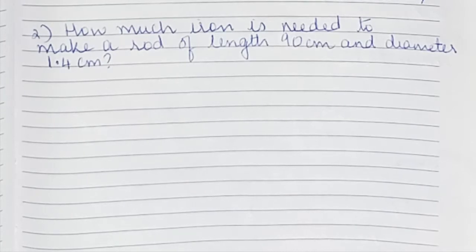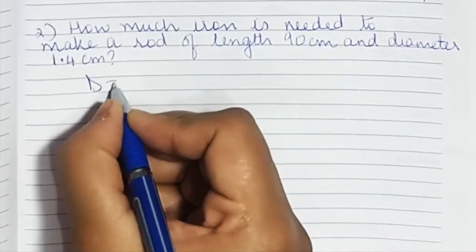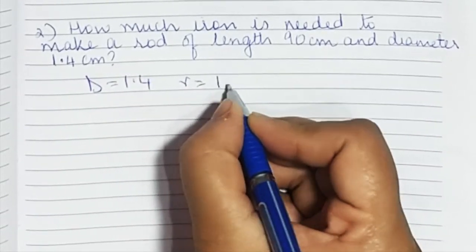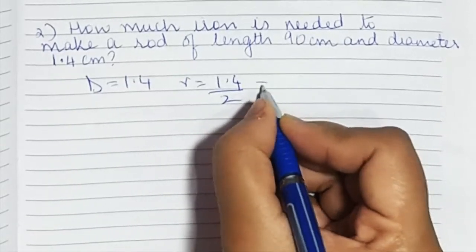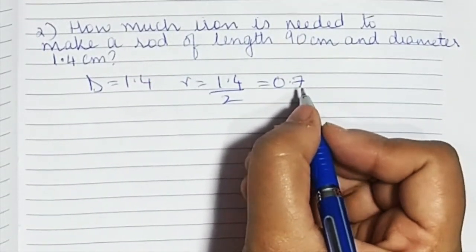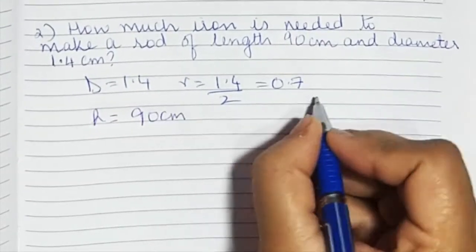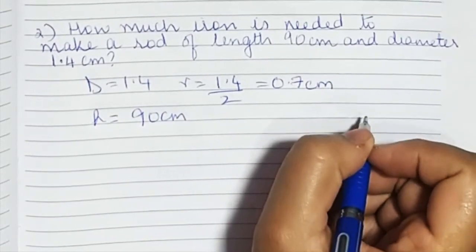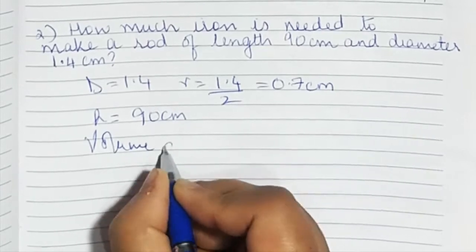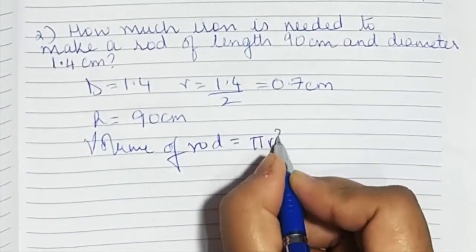Diameter is 1.4, therefore radius is 1.4 upon 2, that is 0.7. Height is 90 centimeters. This is also in centimeters. Now, what we have to find out is the volume. Volume of the rod equals pi r squared h.